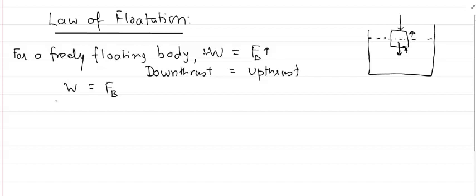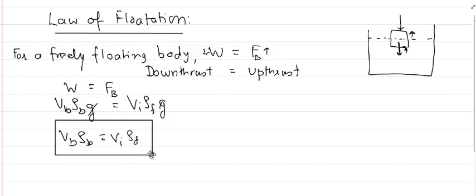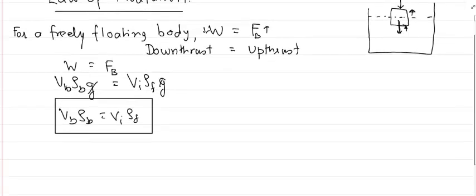Now, W is equal to VB·ρB·g and upthrust is VI·ρF·g. Setting them equal and cancelling g, we get the main equation: VB·ρB = VI·ρF. This is the most important equation which we will keep using throughout this topic.